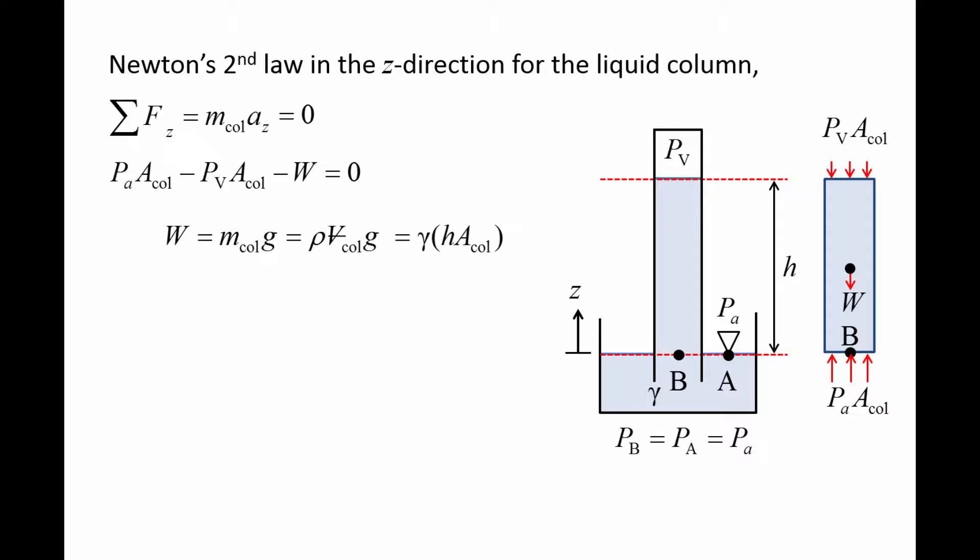Notice that we have also combined density and gravitational acceleration into specific weight, gamma. Plugging in the expression for weight into Newton's second law and eliminating A col, we have that the atmospheric pressure is equal to the liquid's specific weight times the column height plus the vapor pressure of the liquid. So we can determine the atmospheric pressure by simply measuring the height of the liquid column H and looking up the specific weight and vapor pressure of the liquid, both of which are usually very easy to do.